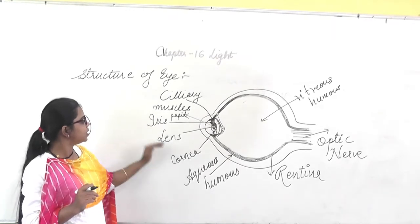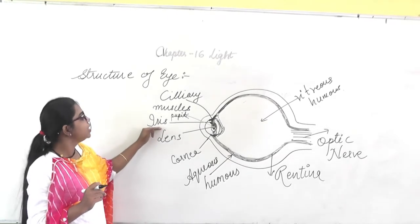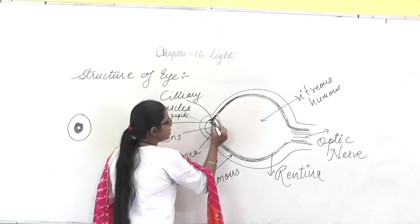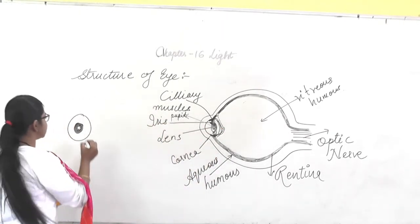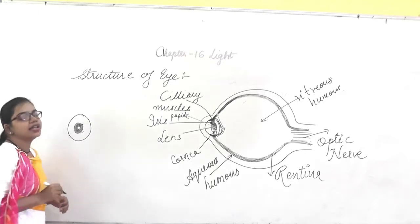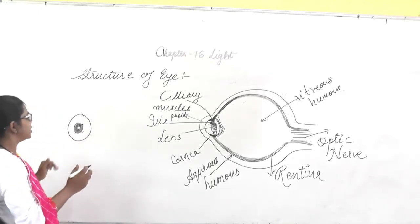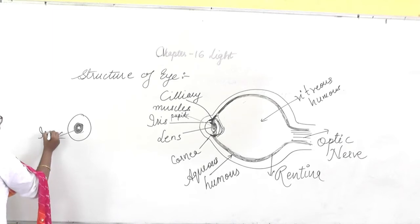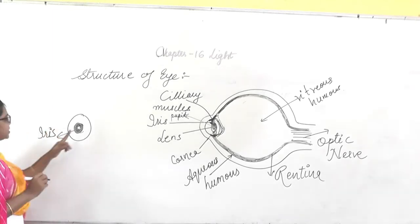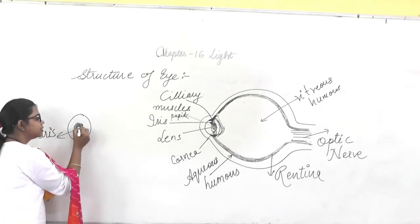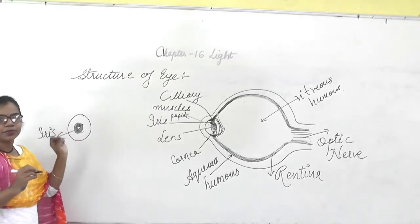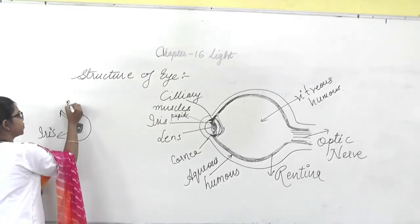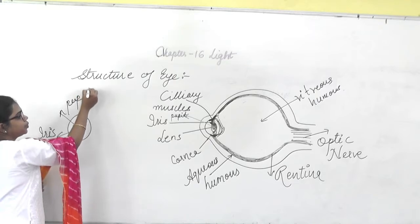Behind the cornea is the iris. The iris is the colored part of the eye. And inside this iris, there is a small dark-colored circular point known as the pupil.